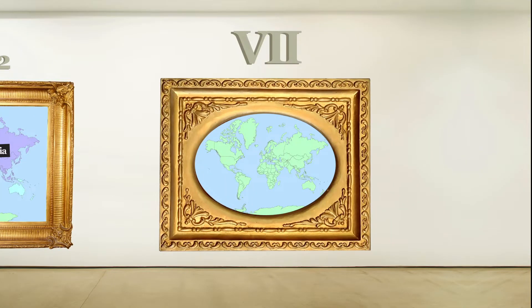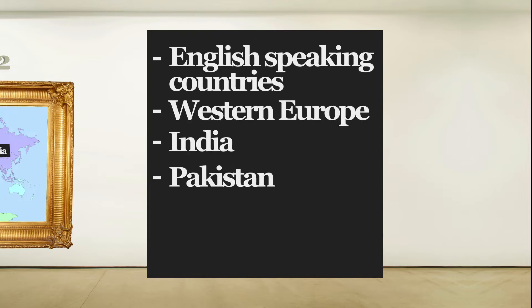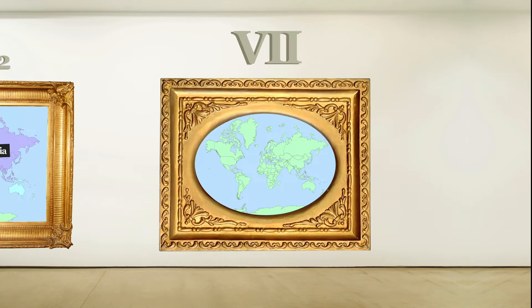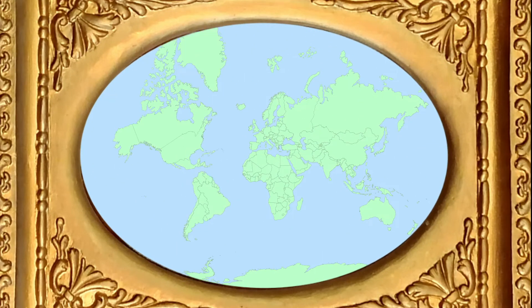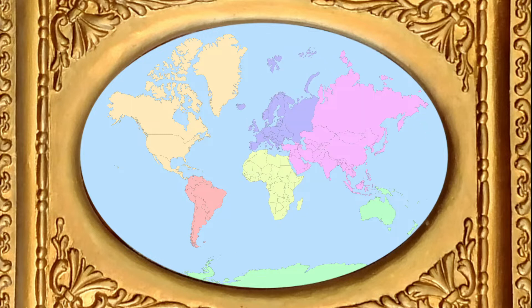The last one, the 7-continent model, is used in English-speaking countries, parts of Western Europe, India, Pakistan, the Philippines and China. This is the one you're probably familiar with. In this one, America gets separated into North and South, Europe, Africa and Asia are their own continents, and Oceania gets demoted into just Australia and its surrounding bodies.